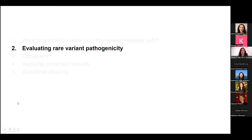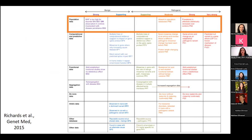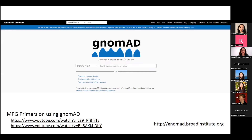I'm now going to move on to evaluating rare variant pathogenicity using GnomAD. When I'm talking about evaluating pathogenicity, I'm mostly referring to the ACMG AMP standards and guidelines released in 2015, which provided different evidence codes that we can use to classify a variant as pathogenic, benign, or variant of uncertain significance. A lot of GnomAD use is specifically for population data, though I'll talk about a couple other features as well.